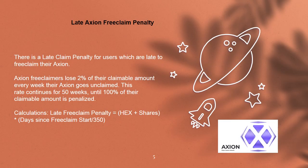There is a late claim penalty for users who are late to free claim their Axion. Free claimers lose 2% of their claimable amount every week their Axion goes unclaimed. This rate continues for 50 weeks until 100% of their claimable amount is penalized. The late free claim penalty formula is: HEX shares × (days since free claim start / 350).